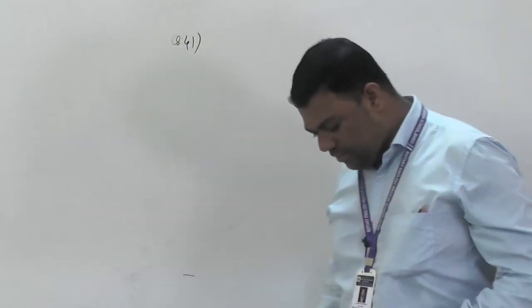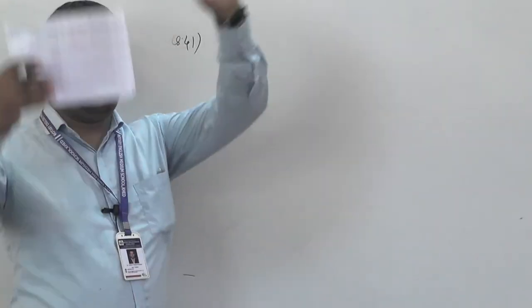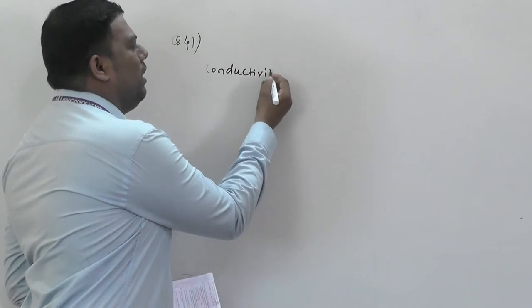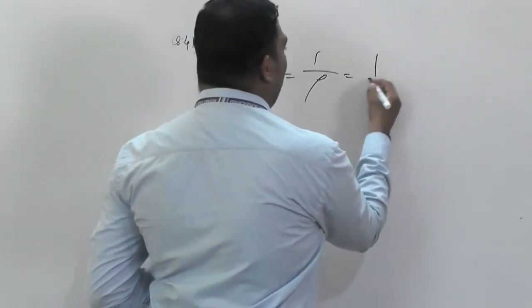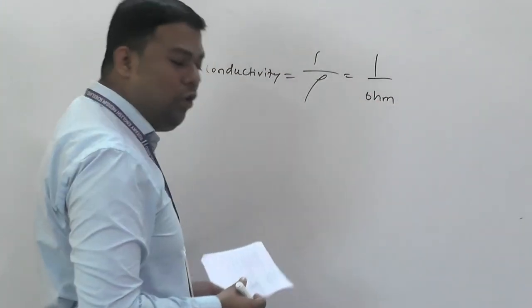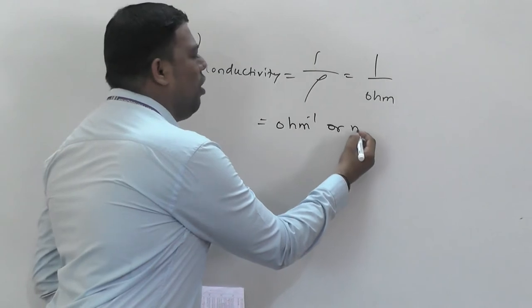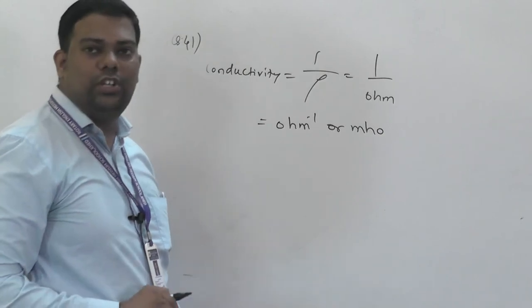Question number 41: the unit ohm⁻¹ is used for conductivity. Conductivity = 1/ρ, and since ρ is in ohms, conductivity is expressed in ohm⁻¹ (also called mho).